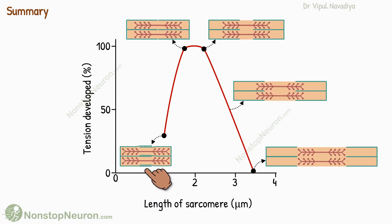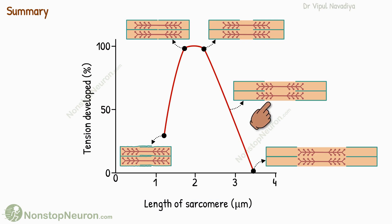In summary: at the shortest length, the opposing actin filaments are overlapping each other and the spatial relationship between actin and myosin is distorted, so less force can be generated. With increasing length, the actin and myosin move toward the optimal position for contraction, so force increases. The maximum force is maintained till all myosin heads are overlapping with actin. Then the actin starts getting pulled beyond myosin heads, some myosin becomes useless, and tension starts decreasing. Eventually, the actin filaments move all the way out of the myosin filaments, so no actin-myosin interaction can take place and force becomes zero.